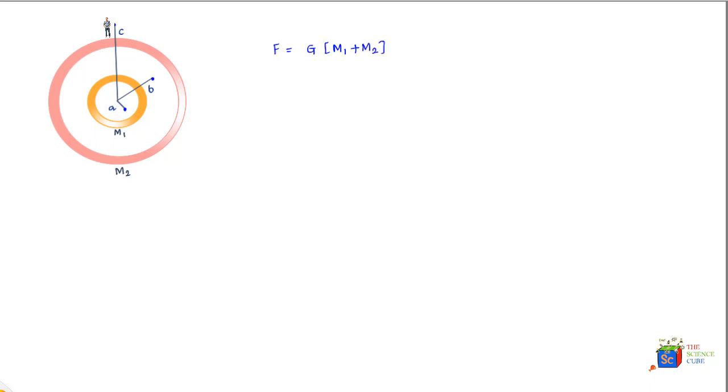assume that the entire mass of M1 and M2 is concentrated at the center. Therefore, the total mass applicable in this equation is M1 plus M2 into your mass m upon r square, and here r square would be c square. Now in the second instance, you move a little inside, that